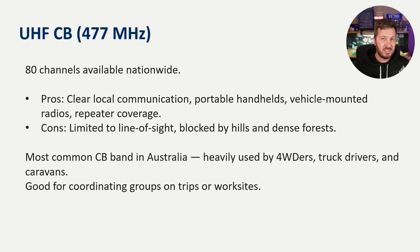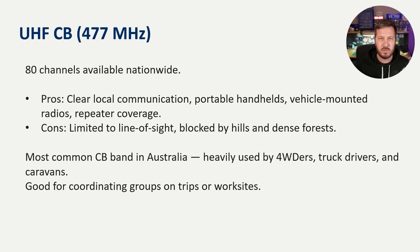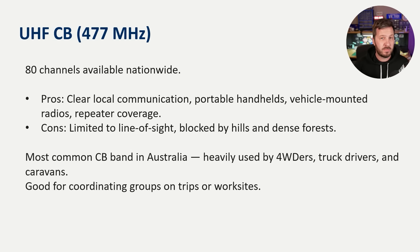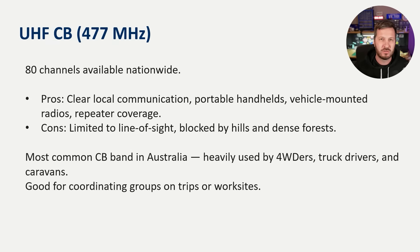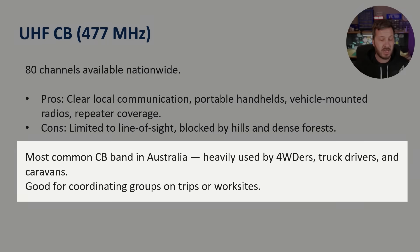The other CB radio band is UHF, on 477 megahertz — quite a lot higher than HF CB. There are 80 channels in the UHF CB radio band, available nationwide, and this is what most people use in their four-wheel drives, caravans, or on the road. The pros are nice, clear local coverage. You can have portable handhelds, vehicle-mounted radios, or base station radios. You can also use repeaters to listen to your signal and repeat it from mountaintops to extend your coverage. The con is that UHF is limited to line of sight and can be blocked by hills and dense forest.